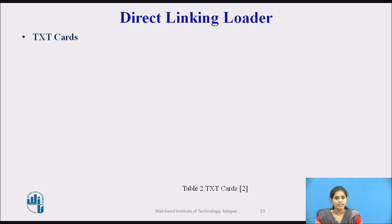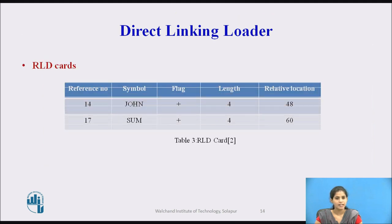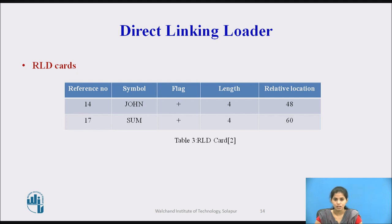The Text card contains the actual assembled program. The first RLD card of our example contains 48, denoting the relative location of the constant that must be changed. A plus sign denotes that something must be added to the constant, and the symbol field indicates that the value of external symbol John must be added to relative location 48. The relative value of John is 0; when the program is loaded, the loader will determine its absolute value.